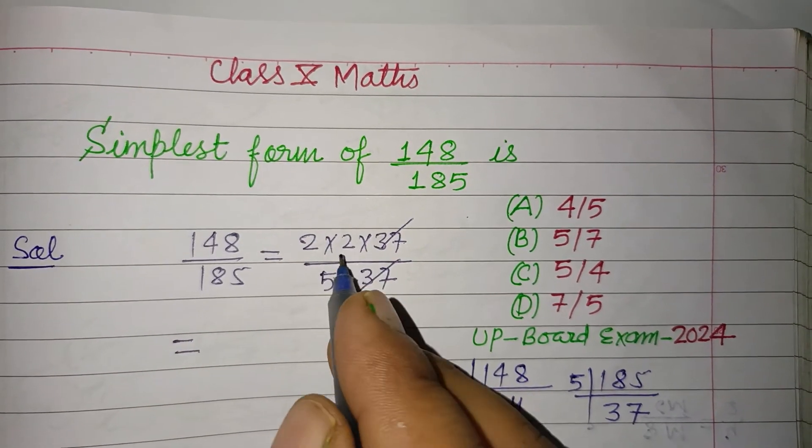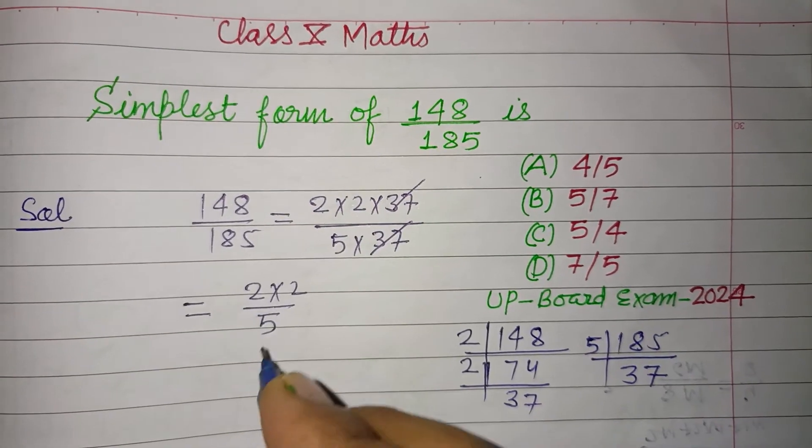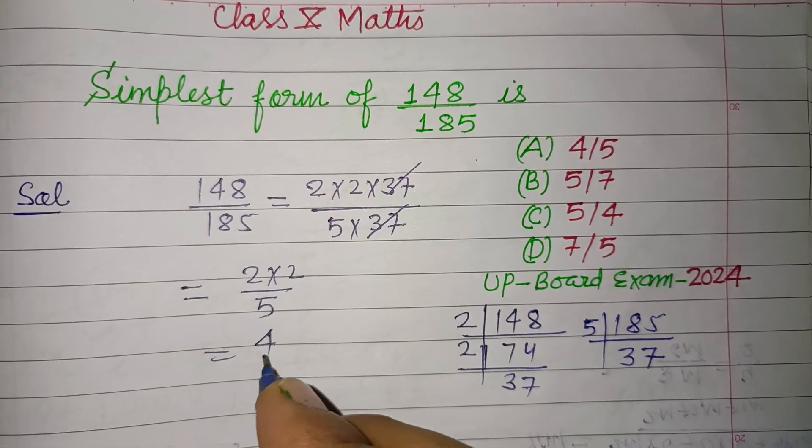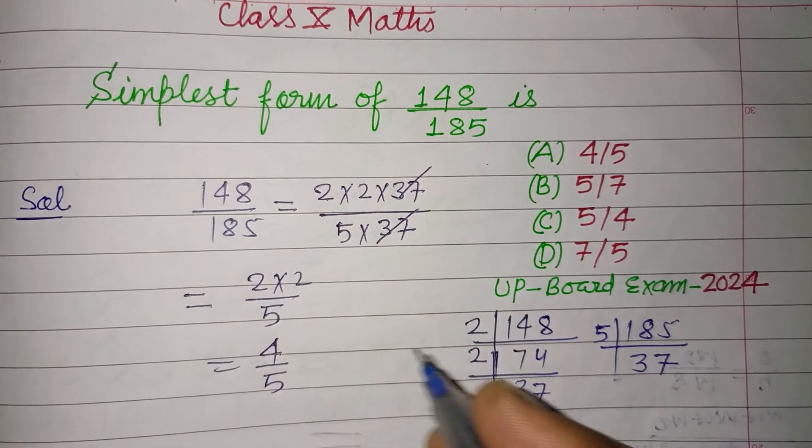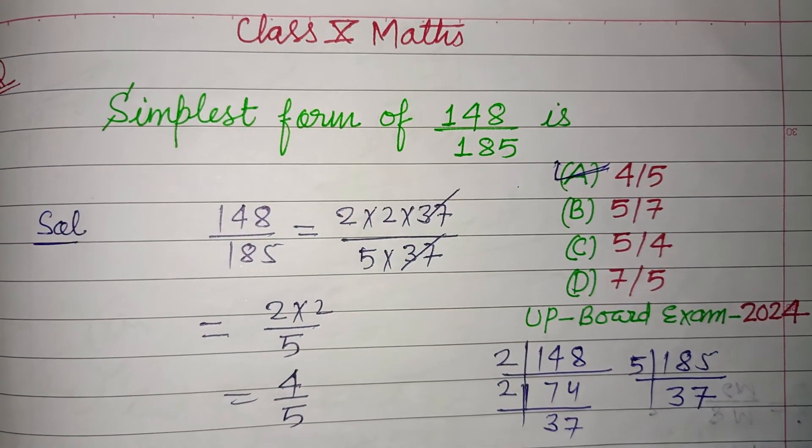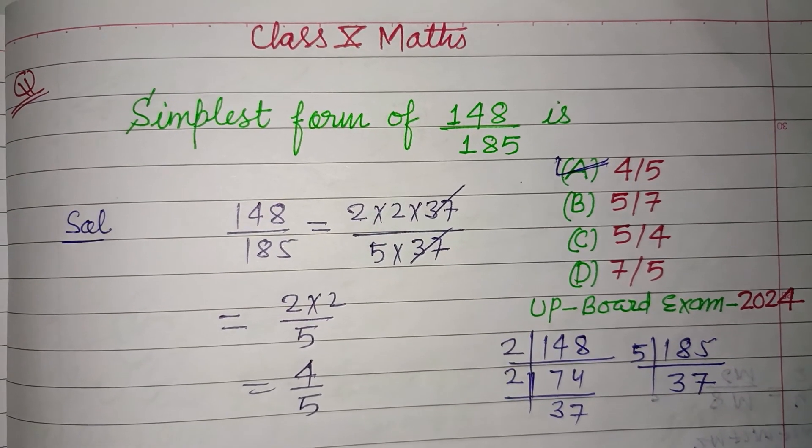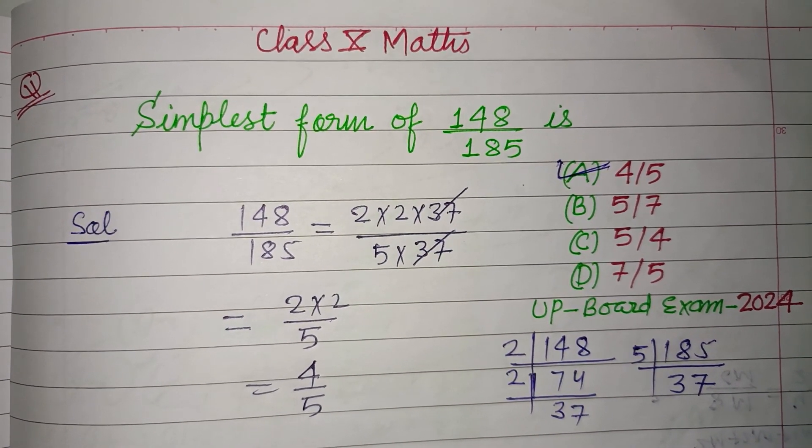The remaining factors are 2 times 2 over 5, which equals 4 over 5. So 4/5 is the simplest form of this fraction. That is the correct answer. I hope you got it. Please like the video, subscribe to the channel, and thanks for watching.